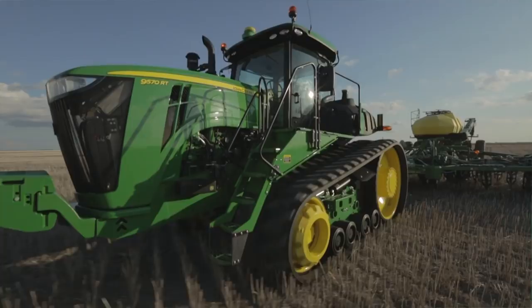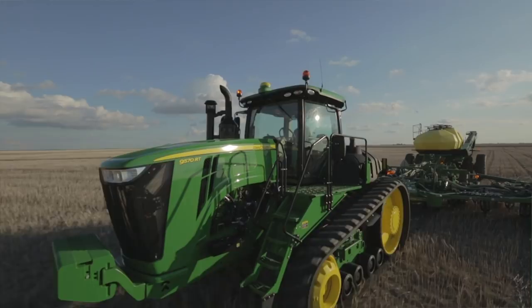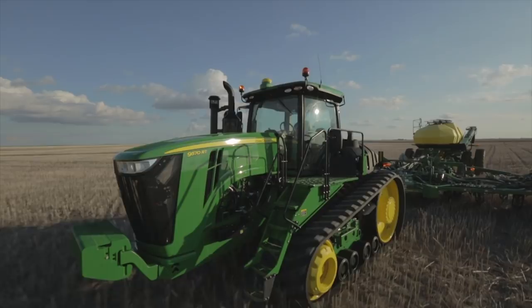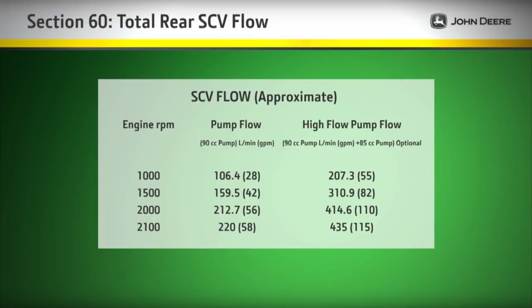You also need to verify that the engine speed is high enough to produce enough pump flow to meet the total flow for the implement. In section 60 of the operator's manual, there is a table that shows the pump flow at various engine speeds. Add up the flow for each SCV function to determine the required total pump flow and engine speed.